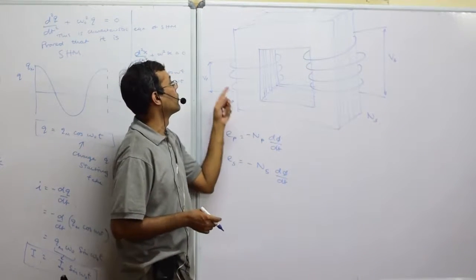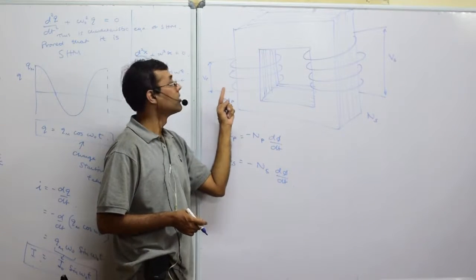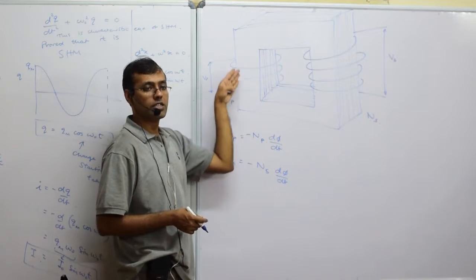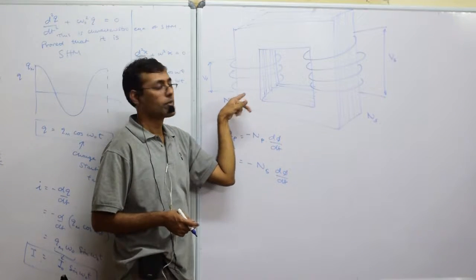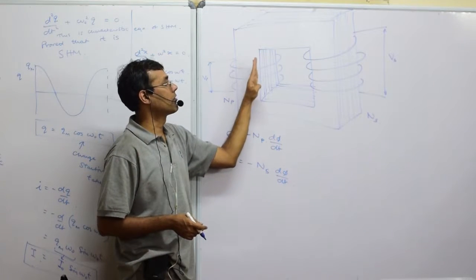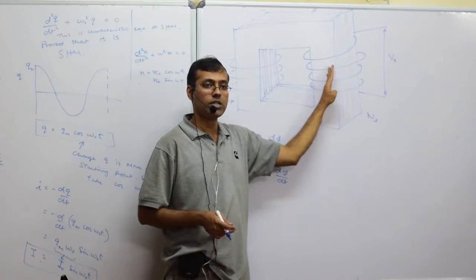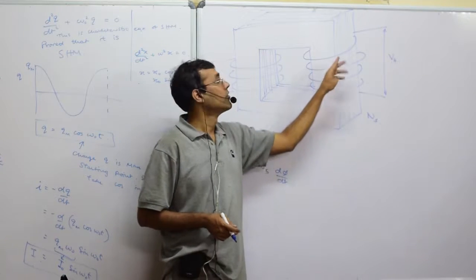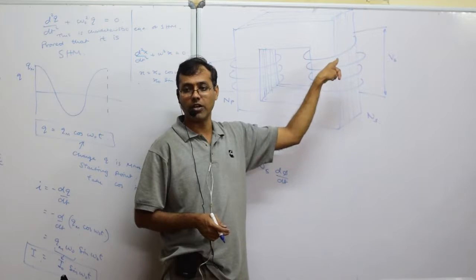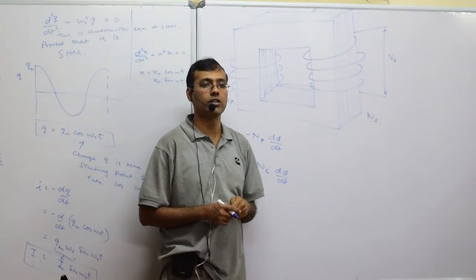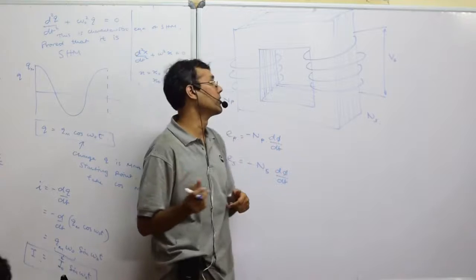The alternating current is given on the primary side, which means the current is changing, which means the magnetic flux is also changing. If the magnetic flux here is changing, the magnetic flux on the secondary side is also changing, which means there will be some induced current in the secondary coil. So if they ask you what is the principle of working of a transformer, take it down.